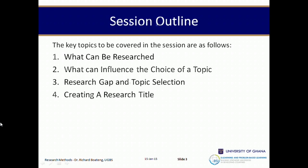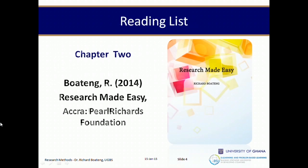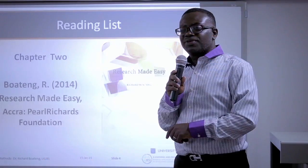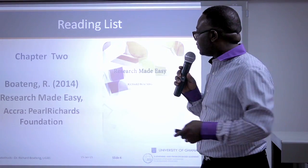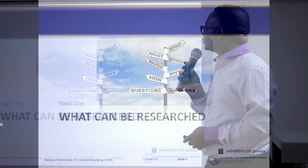Our session overview covers four areas: what can be researched, what can influence your choice of topic, research gaps and topic selection, and creating a research title. We are looking at chapter 2 of our research made easy book, which goes alongside the slides in the video.